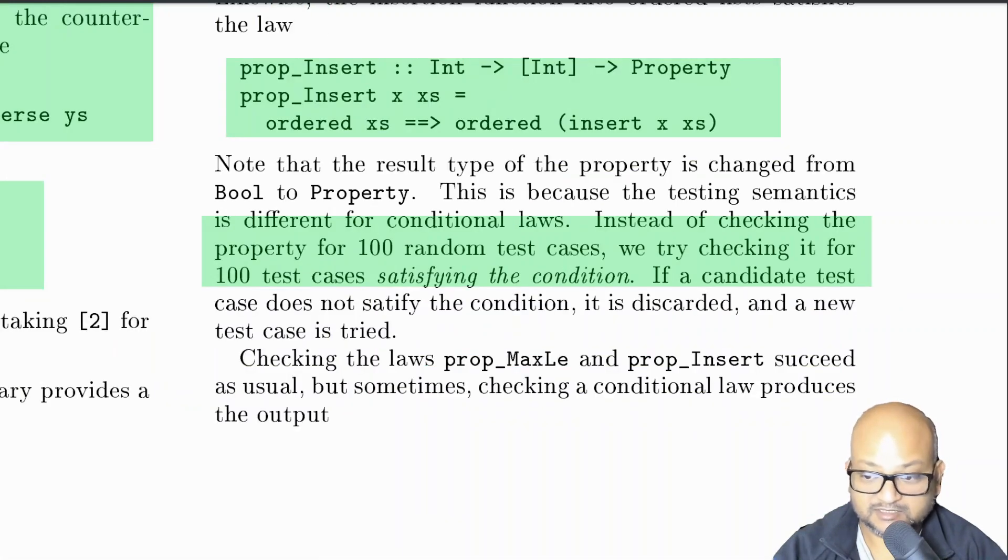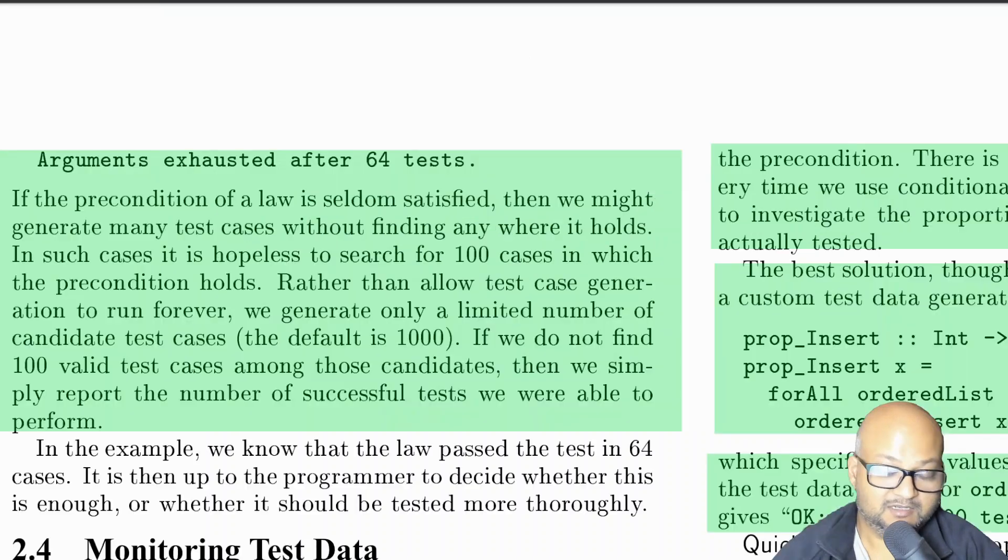What QuickCheck does in such cases is to try generating test cases that satisfy the condition. So instead of just running 100 random test cases, it will first try to find 100 test cases that already satisfy the condition. Now it might very well happen that the precondition is very hard to satisfy. And in that case, QuickCheck will give up after some number of tries rather than just keep trying to generate valid test cases for a very long time.